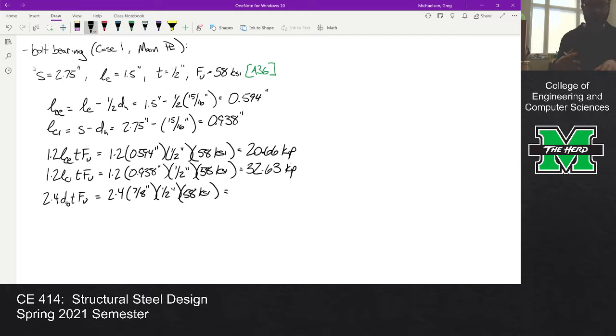This is 0.938, this comes out to be 32.63, and then 2.4 times 7/8. Checking all this out we get 60.9.